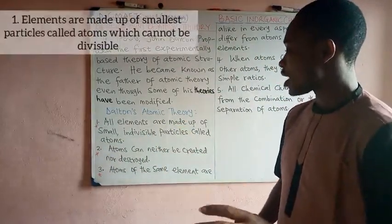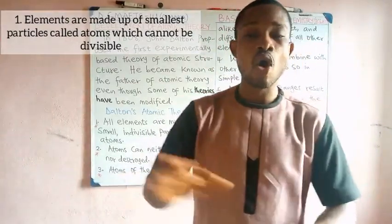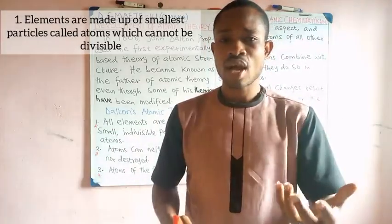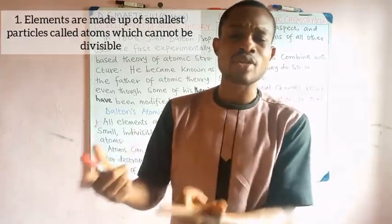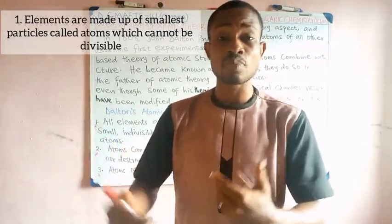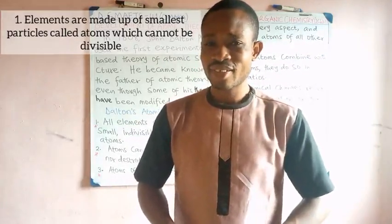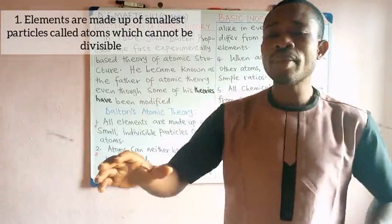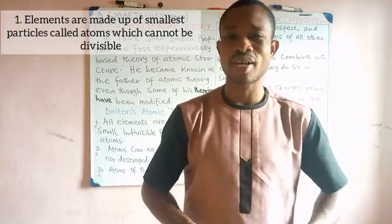Number one: all elements are made up of small, indivisible particles called atoms. All elements are made up of atoms; however, the discovery of sub-atomic particles — like protons, neutrons, and electrons — as well as sub-atomic particles such as gluons, neutrinos, positrons, and quarks, shows that while all elements contain atoms, this atom likely could not be the smallest particle of an element.